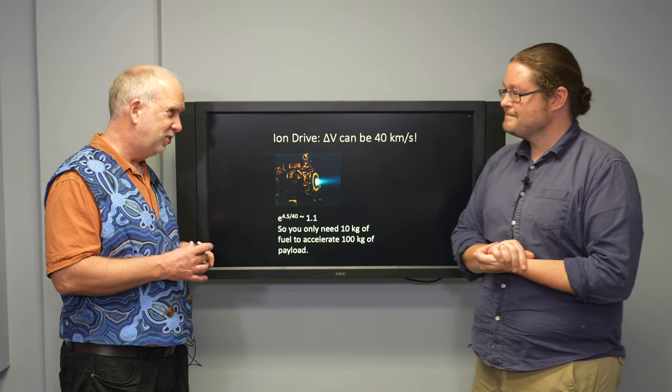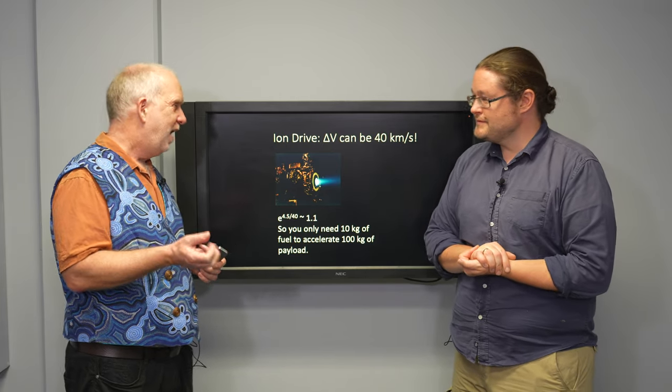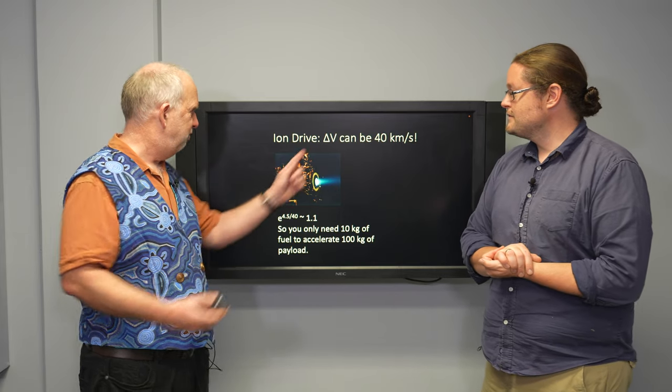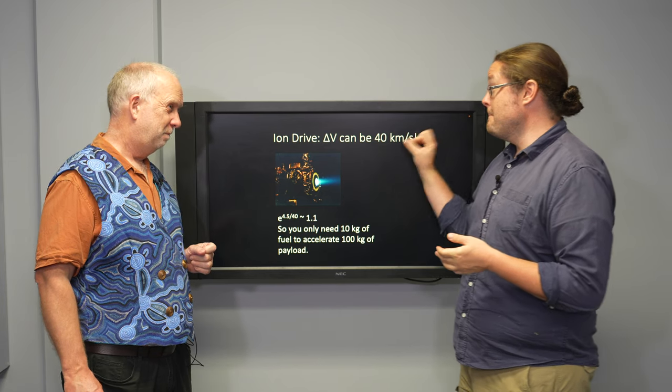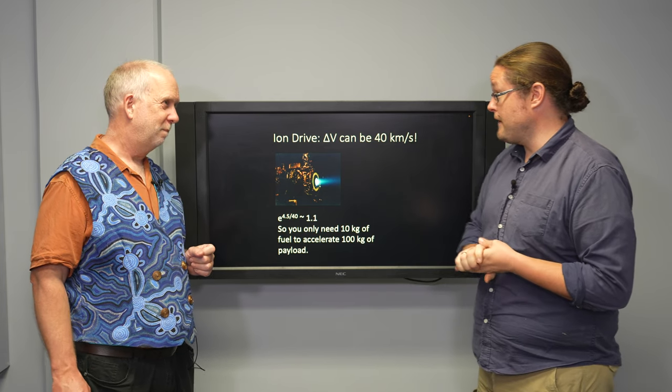But once you're in space, you can fire a very small mass, say xenon, out at a very high speed. And their VE, should be VE not Delta V, could be 40 kilometers a second. So that's dramatically better than what we saw with the Falcon Heavy.